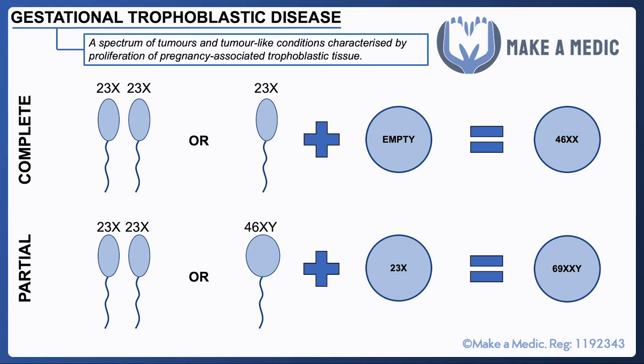The difference between the complete and partial moles is very much based on whether it's an empty egg or an egg with chromosomes in it that fuses with the sperm, but it also tells us about what to expect with regards to how it progresses. A partial mole may actually develop some differentiation and some features of a developing pregnancy; however, both of these cases are completely non-viable and need to be treated.